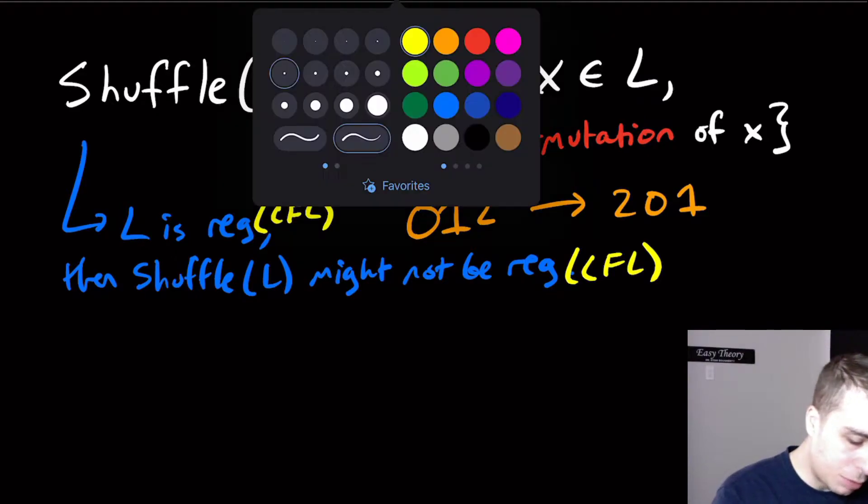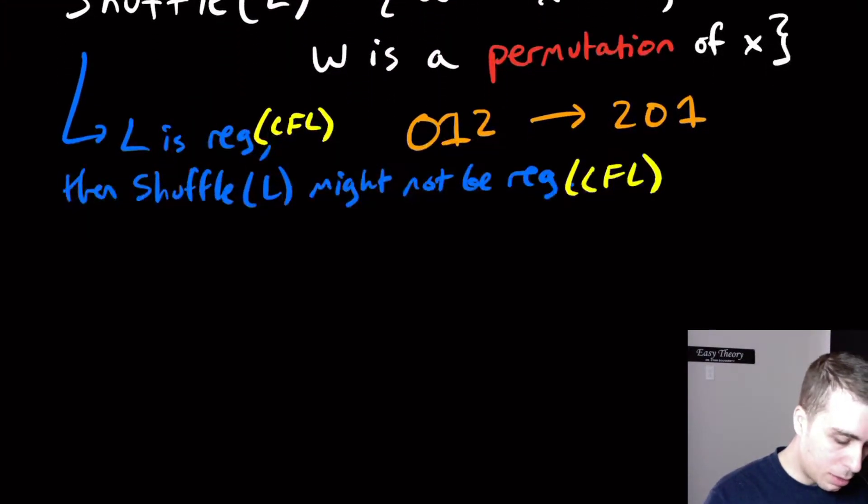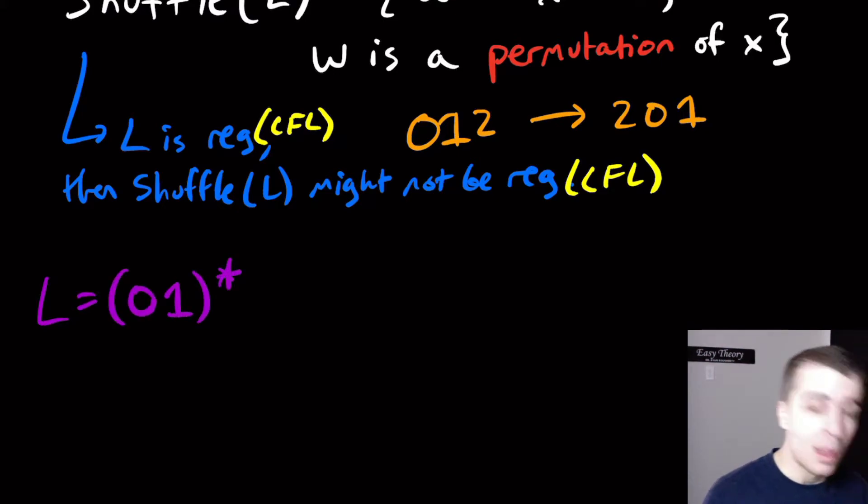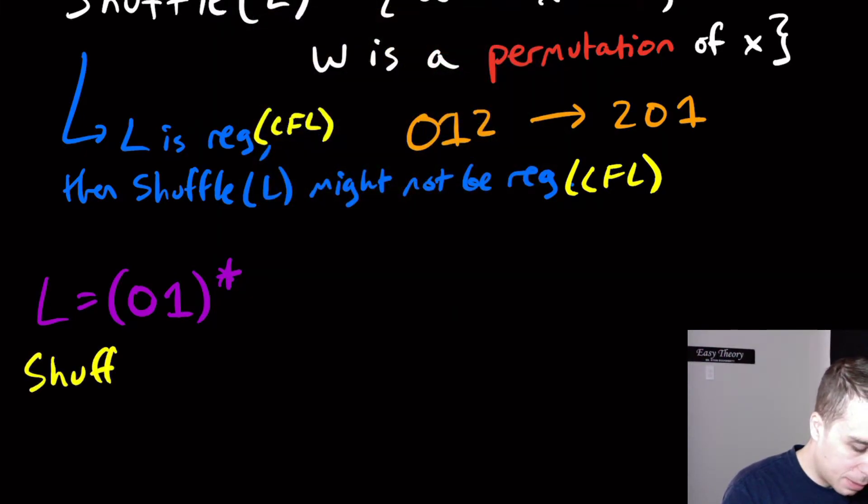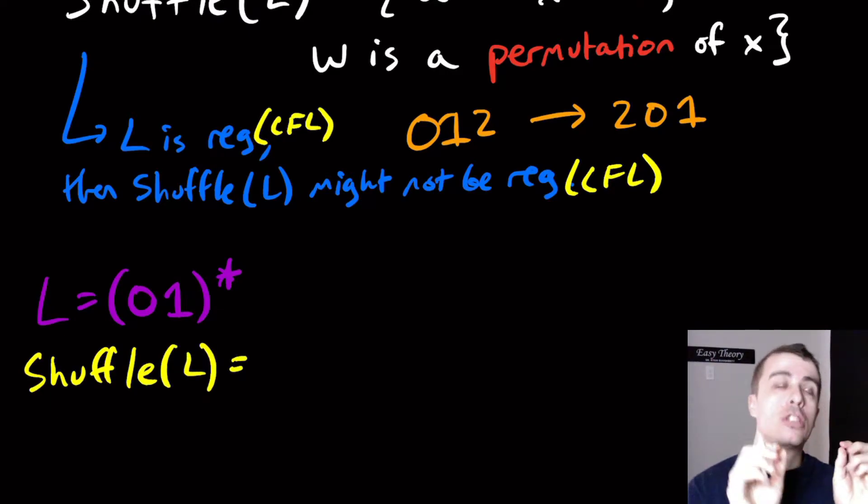The first one is actually really easy to show. If I let L be 0, 1 star, then that's clearly regular because it's a regular expression I just wrote. But then if we look at what the shuffle of L is, let's look at that.